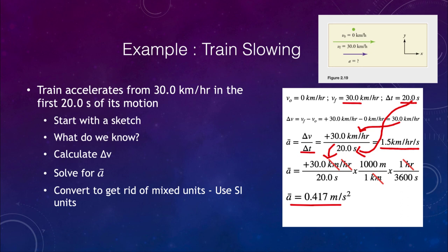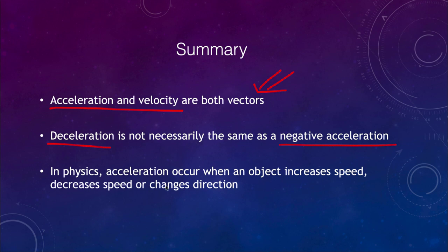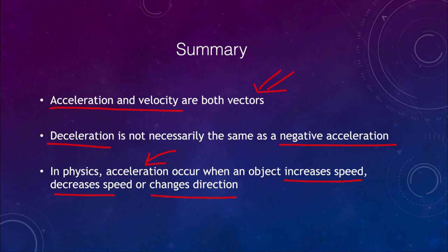Let's finish up with our summary. In this lesson we talked about acceleration and velocity and how they are both vector quantities. We looked at deceleration and defined that it is not the same as a negative acceleration — that depends on the coordinate system, whereas deceleration means slowing down. In physics, an acceleration can occur when an object increases its speed, decreases its speed, or changes direction — any of those will change the velocity and cause an acceleration to occur. That finishes up this lecture on velocity and acceleration. We'll be back next time for another topic in physical science.